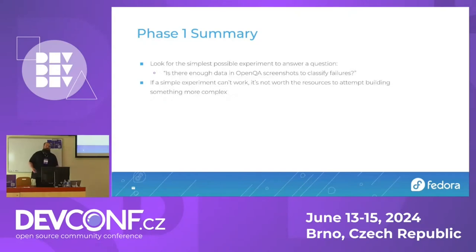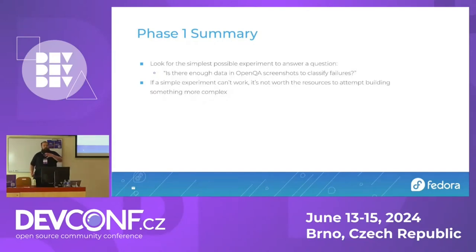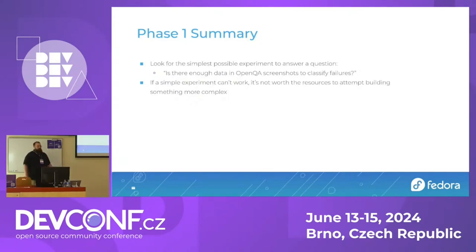Phase one: the best way to sum it up is, what is the simplest possible experiment we could do to answer the question of does this idea have legs? Is there enough data in the visual output from OpenQA tests to actually classify the failures one way or another? The idea being that if the simplest possible thing doesn't work, there's no point doing the more expensive, more difficult thing. But if the simple experiment works, then more research is justified.